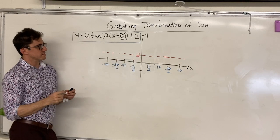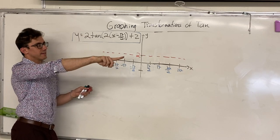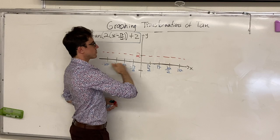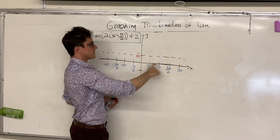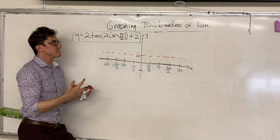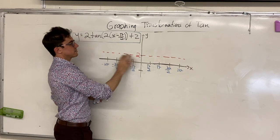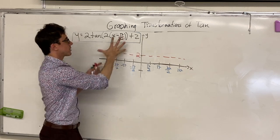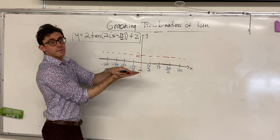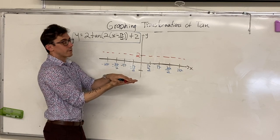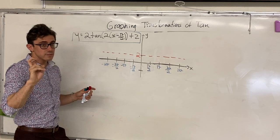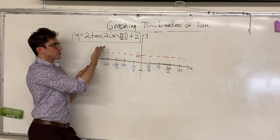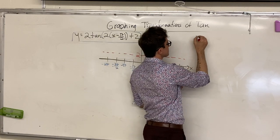I've started by making this horizontal dashed line at y is equal to 2. The reason being, for the general tan function y is equal to tan of x, we look for the zeros of our function — that is to say, whenever the function crosses our x-axis. The analogy to that in this case is going to be the points where we cross this y equals 2 axis, because of our vertical translation of plus 2. So our entire tan function was simply shifted up by 2 units vertically.